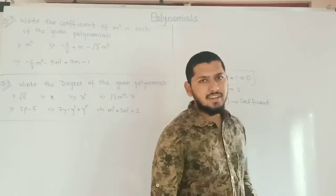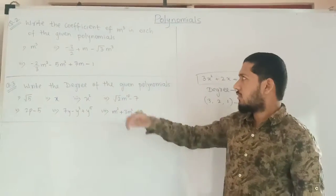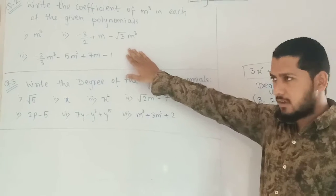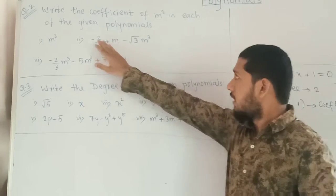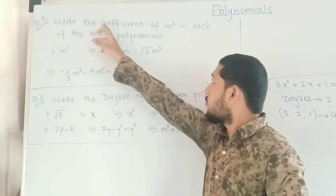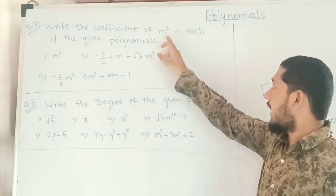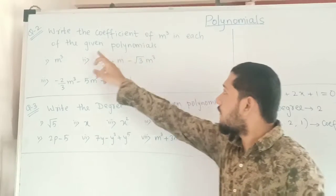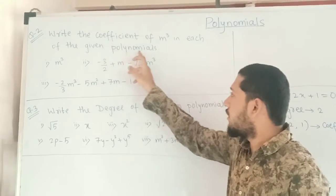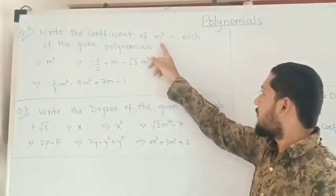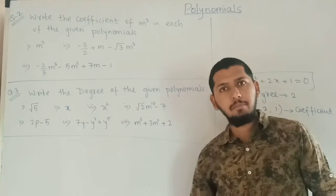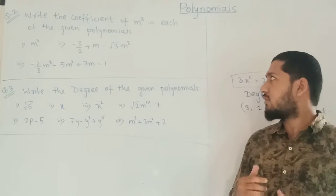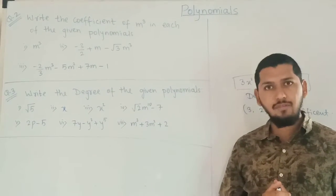Now this is question number 2 and question number 3. In question number 2 we have to write the coefficient of n cubed in each of the given polynomials. Here n is the variable, and we have to calculate the coefficient of n cubed.